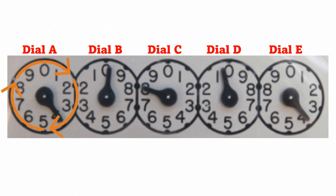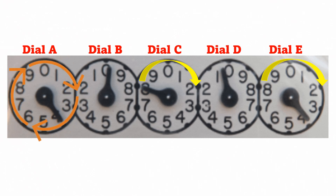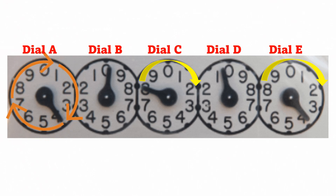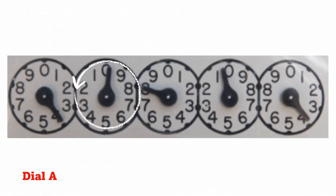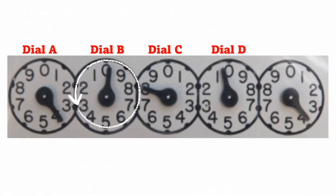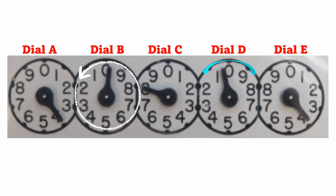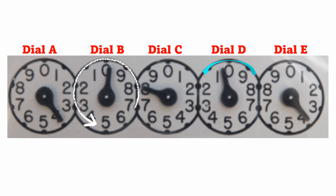In dial A, dial C, and dial E, the pointers will turn clockwise. The pointer starts at zero and moves in a clockwise direction, just like the movement of the arrows in dial A. In dial B and dial D, the pointers will turn counterclockwise, just like the movement of the arrow in dial B.